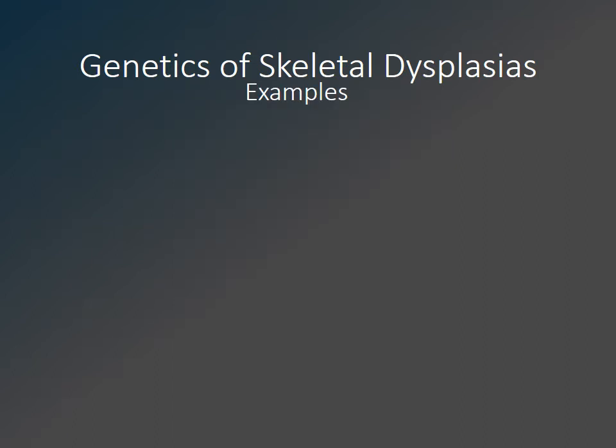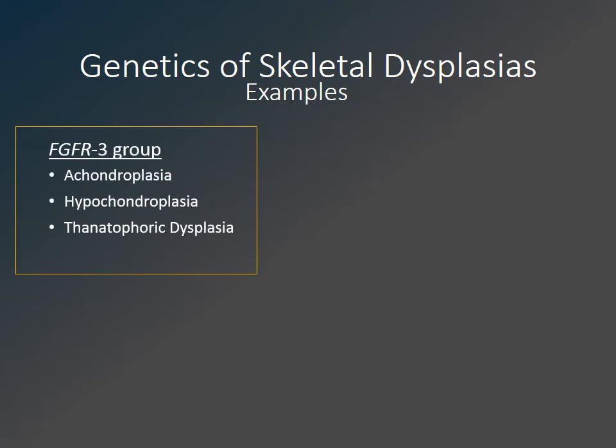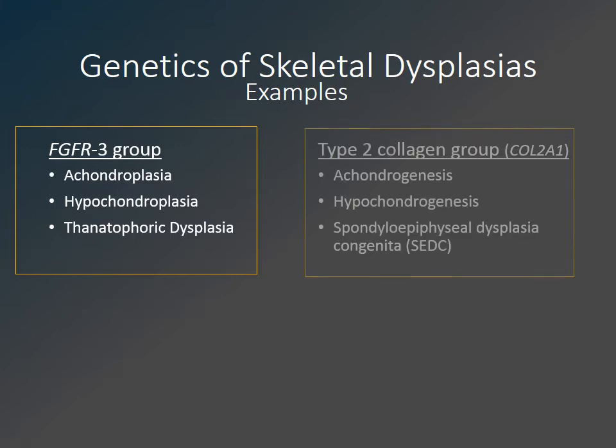Mutations in the fibroblast growth factor receptor 3 gene, or FGFR3, may lead to achondroplasia — the most common non-lethal skeletal dysplasia — or others of varying clinical severity, including hypochondroplasia and thanatophoric dysplasia. Mutations in the gene for type 2 collagen may lead to some forms of achondrogenesis, hypochondrogenesis, and spondyloepiphyseal dysplasia congenita.